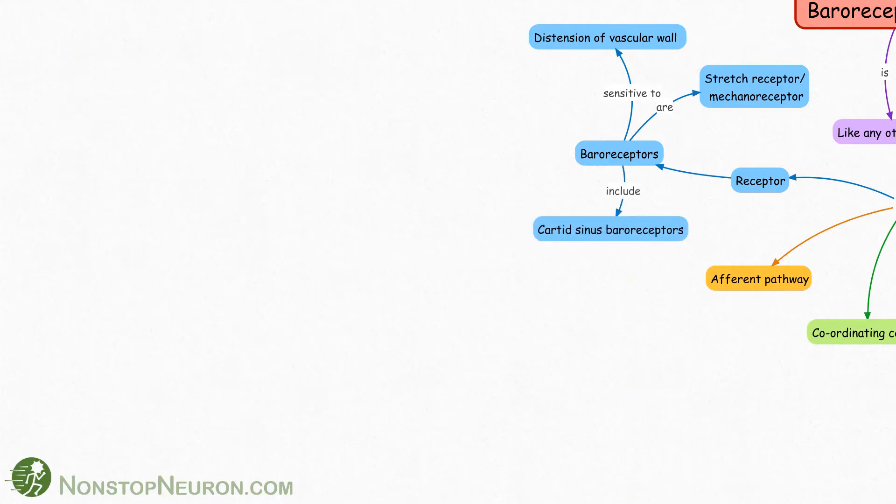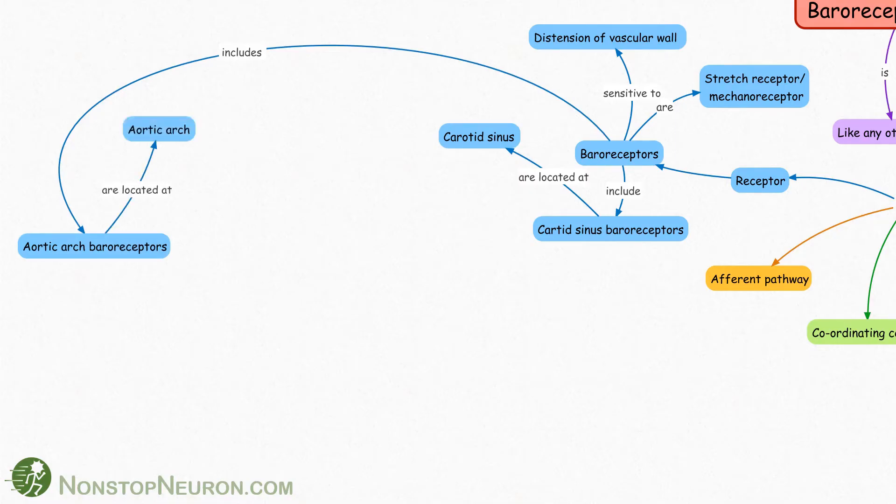Starting with receptors. Receptors in this reflex are of course baroreceptors. Baroreceptors are basically stretch receptors or mechanoreceptors and they are sensitive to stretch in vessel wall. In the body we have carotid sinus baroreceptors located at carotid sinus, and aortic baroreceptors located at aortic arch.